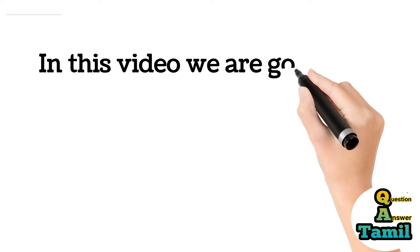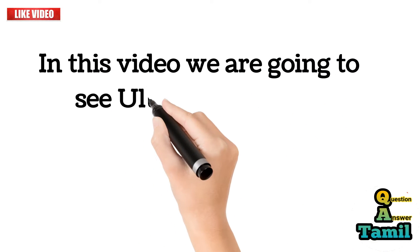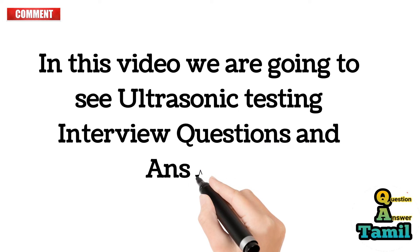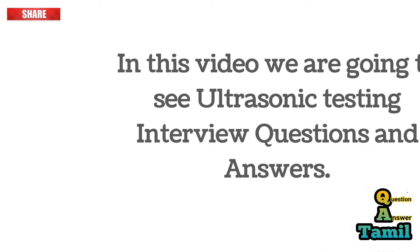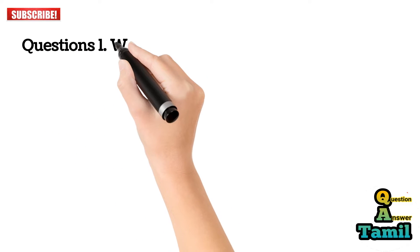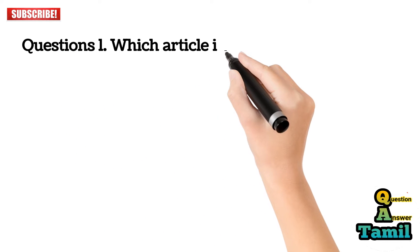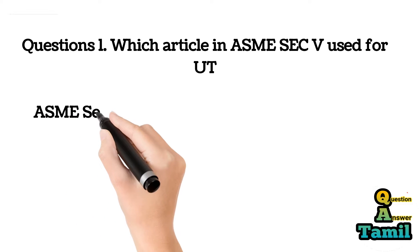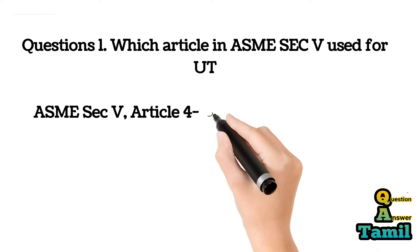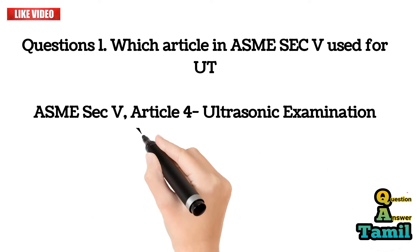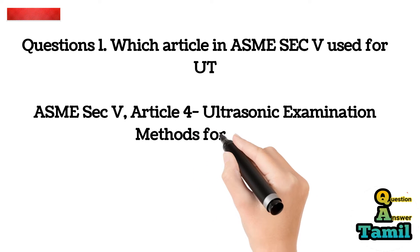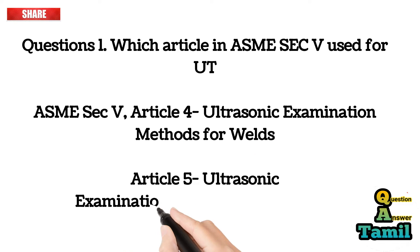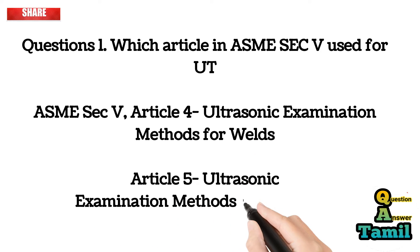In this video we are going to see ultrasonic testing interview questions and answers. Question 1: Which article in ASME Sec V is used for UT? ASME Sec V, Article 4 — ultrasonic examination methods for welds; Article 5 — ultrasonic examination methods for materials.